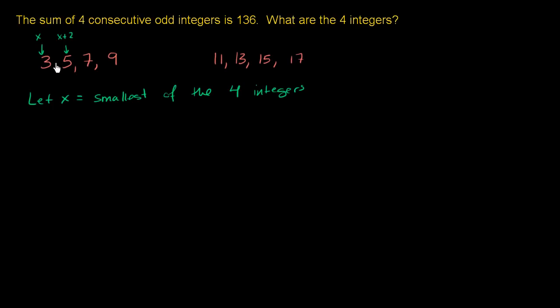The next odd integer is going to be the previous odd integer plus 2. You're essentially skipping the next number, which is going to be even. So if you added 1, you just get to an even number. You have to add 2 to get to the next odd one. If you add 2 again, if you add 2 to x plus 2, now you get to x plus 4. You add 2 to that, you get to x plus 6.